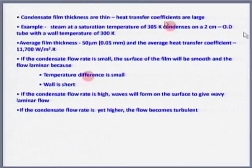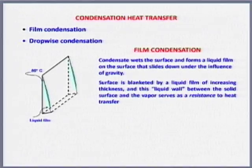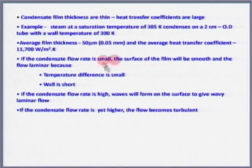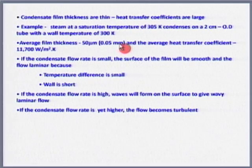In film condensation the heat transfer coefficients are generally around 11,700 W/m²K. In the condenser problem yesterday I took 21,800 W/m²K. The heat transfer coefficients in two-phase flows are enormously high. If you have a film of about 0.05 mm thickness, you get an average heat transfer coefficient of 11,700 W/m²K.